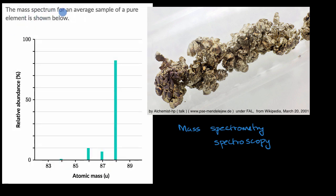So this tells us the mass spectrum for an average sample of a pure element is shown below. And it's a sample of this right over here. And so what this tells us is that we have an isotope right over here with an atomic mass of 84 universal atomic mass units, but it's a very small percentage of our sample. It looks like it's maybe one or two percent.